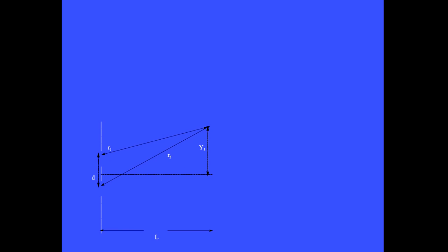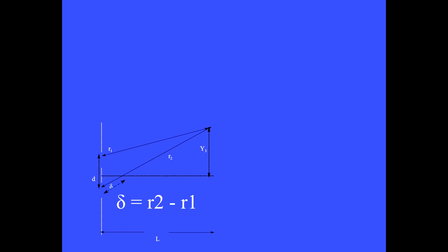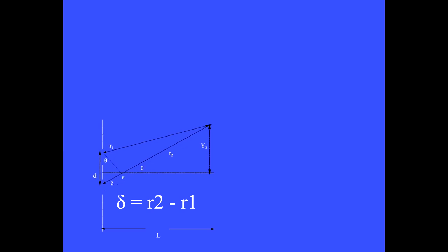R1 is the distance from that point on the screen to the top source, and R2 is the distance to the lower source. The path difference delta is R2 minus R1. This triangle has hypotenuse d, which is the distance between the two sources. The path difference delta is also d sine theta.